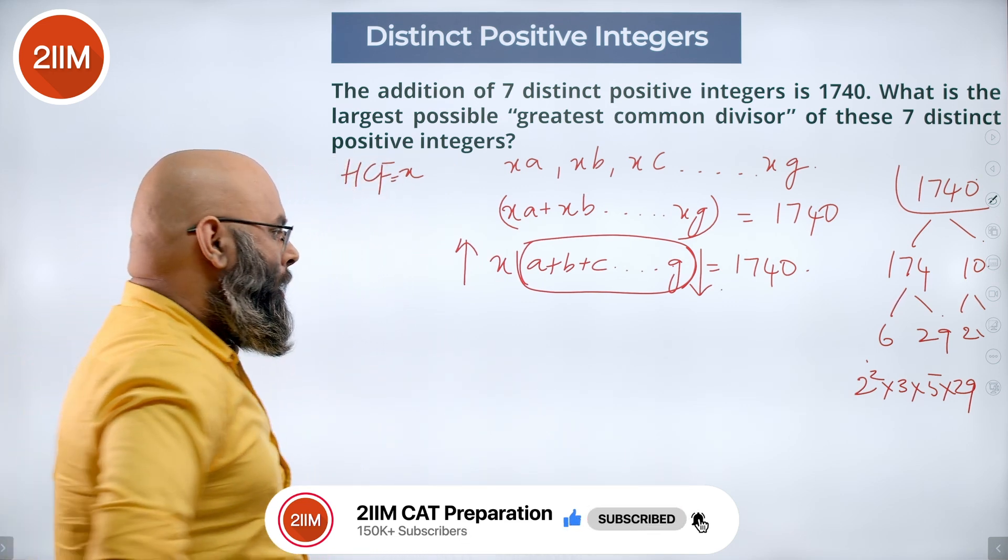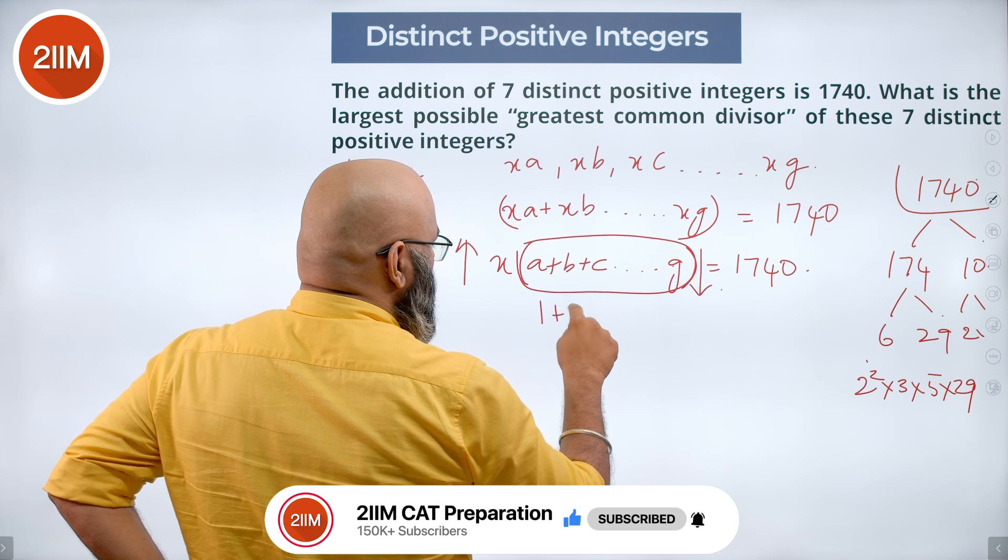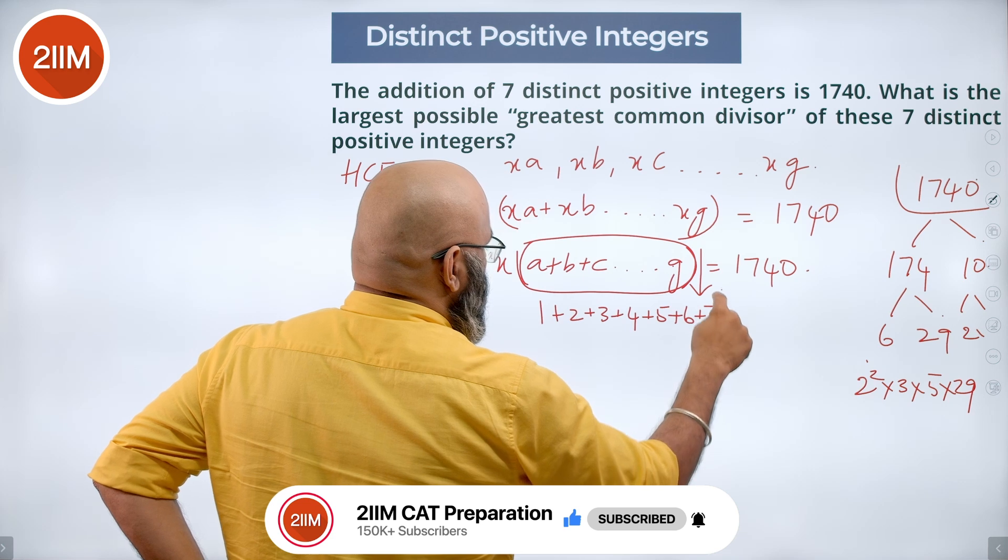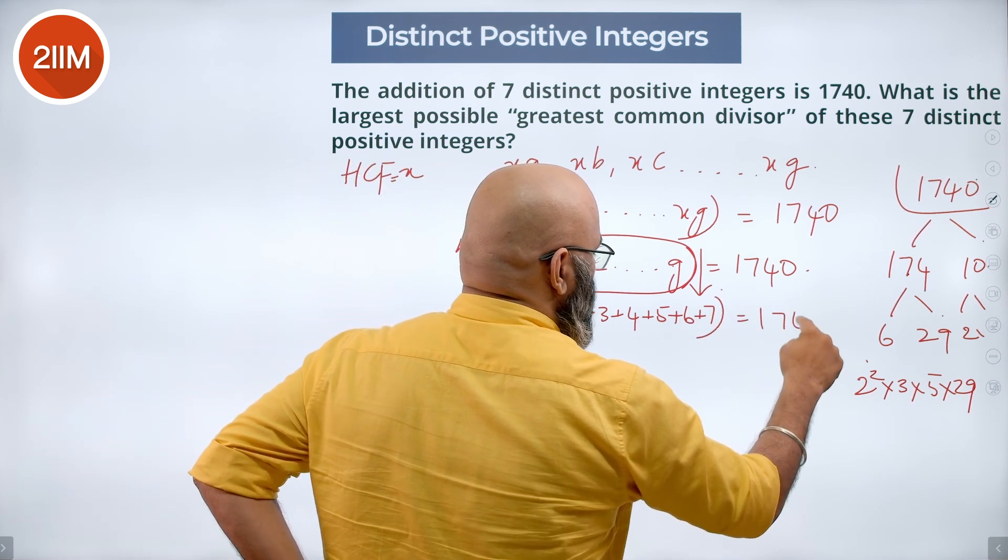To bring them to minimum case, I am taking all of them to be 1, 2, 3, 4, 5, 6, 7 into X is equal to 1740.